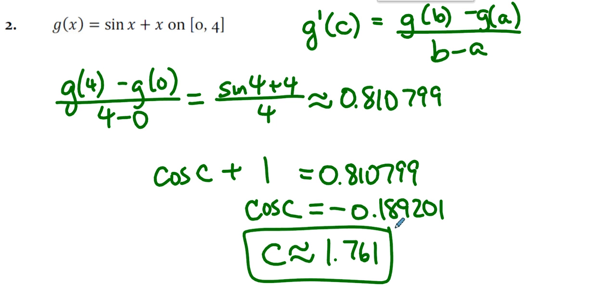What are the important things to remember here? We set the derivative equal to the slope of the secant line. The slope of the secant line is figured out by using function values at both ends of the interval. And then the rest is a calculator problem.